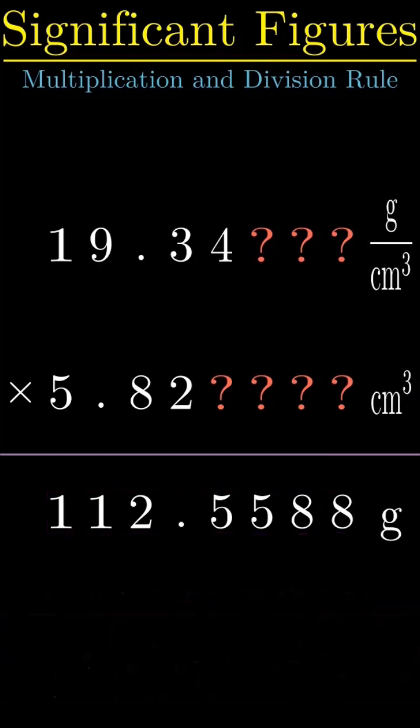So what do we do? Since we don't know the 7th digit in all values, we do not keep it in the answer. Same goes for the 6th, 5th, and 4th. This means we report the mass as 112 grams, but depending on the application of rounding rules, 113 grams is acceptable too.